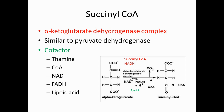The next step of the TCA cycle is succinyl-CoA. Succinyl-CoA is converted from alpha-ketoglutarate with the help of the alpha-ketoglutarate dehydrogenase complex, which is similar to the pyruvate dehydrogenase complex and shares the same cofactors: thiamine, coenzyme A, NAD, FAD, and lipoic acid, as discussed in the pyruvate dehydrogenase video.